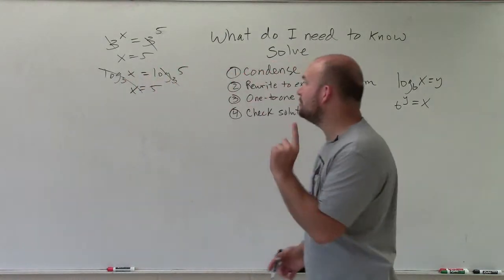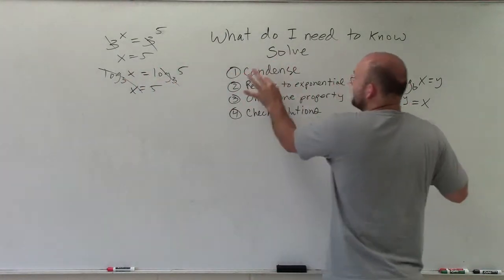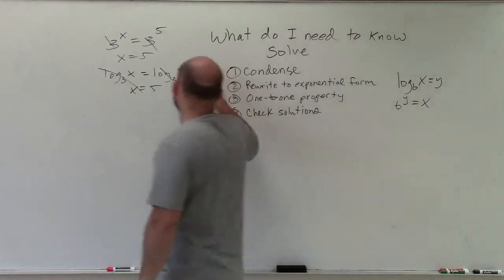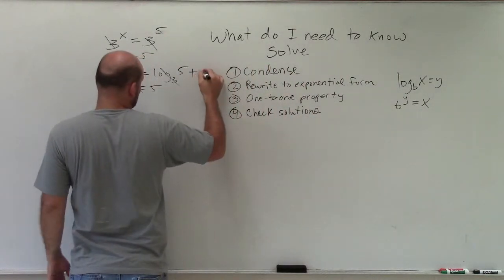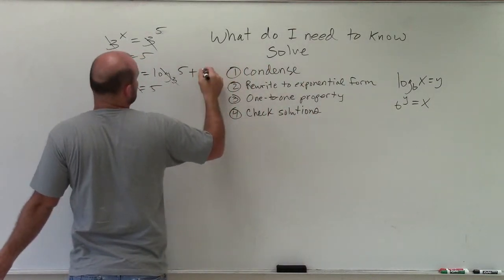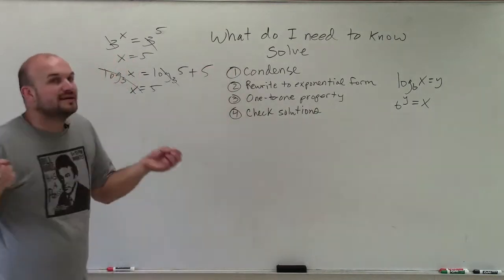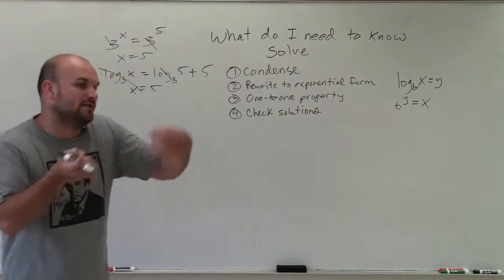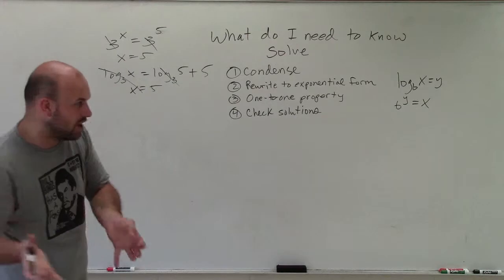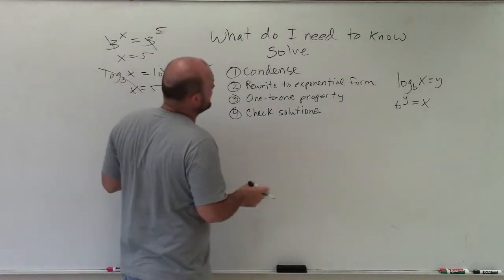But before you do that one-to-one property, you have to make sure you condense. If there is, for instance, a plus 5 over here, you cannot apply the one-to-one property. It's only when a logarithm equals another logarithm. So we've got to make sure we have that in order.